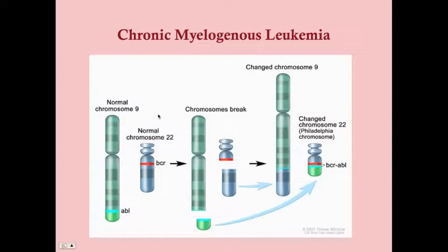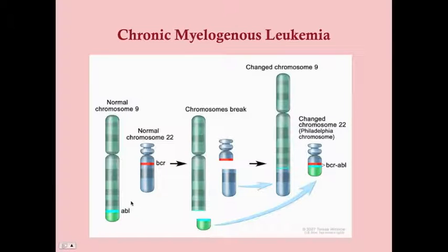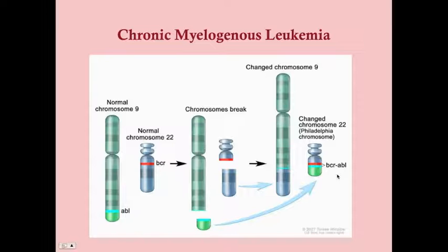Returning to the translocation: chromosomes get smaller as the number increases. In the BCR-ABL translocation, the BCR portion of chromosome 22 translocates next to ABL on chromosome 9, creating a BCR-ABL fusion protein. The changed chromosome that carries the BCR-ABL gene is known as the Philadelphia chromosome.